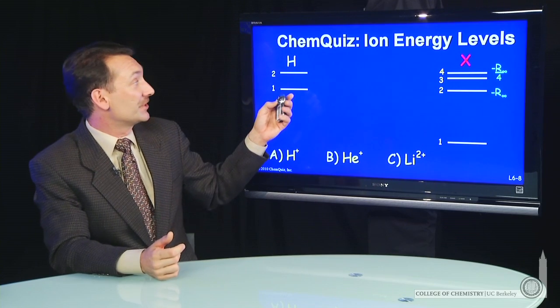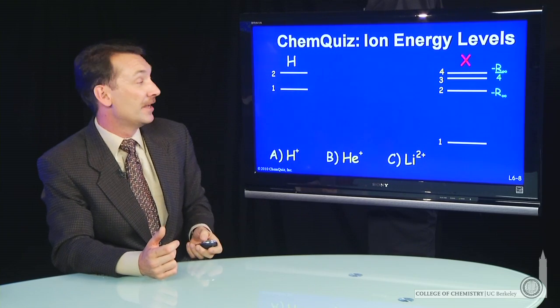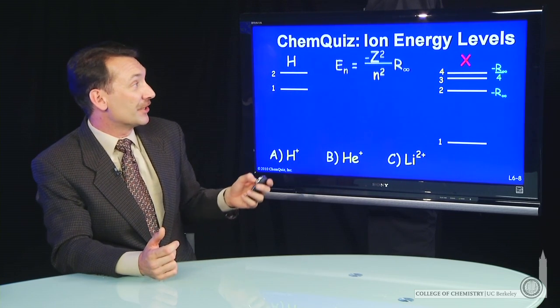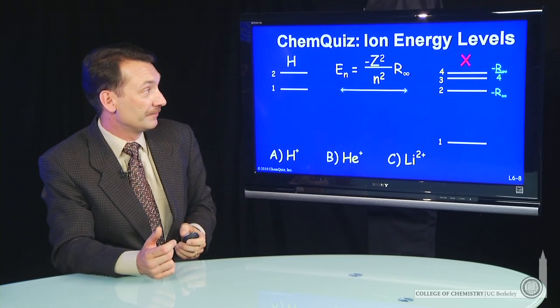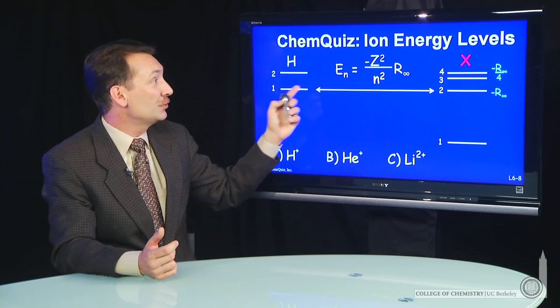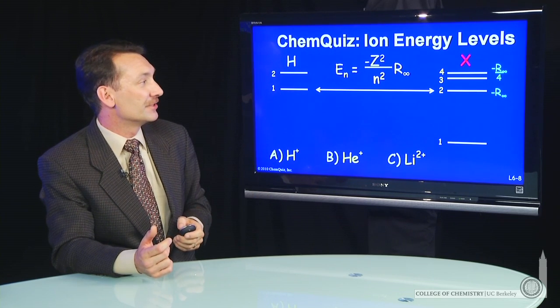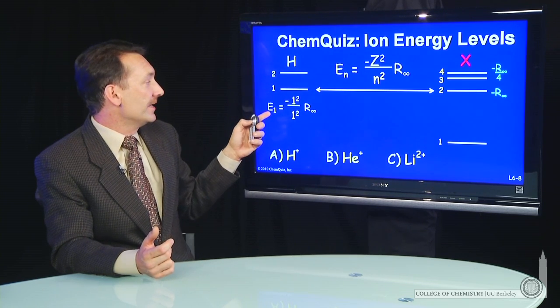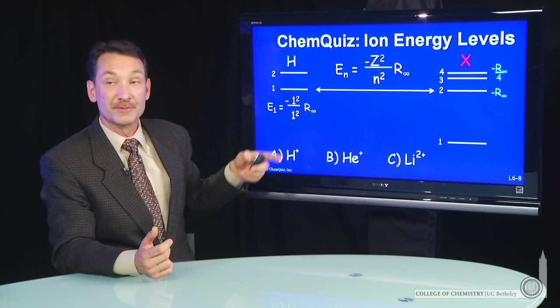Let's look at this one in particular. Here we have hydrogen and some other ion. What lines up here? We know the energies go as -Z²/n². We see that level 2 in the unknown system lines up with level 1 in the hydrogen system, and that energy for hydrogen is 1²/1² times R∞.